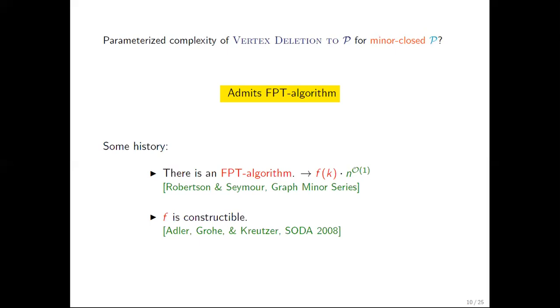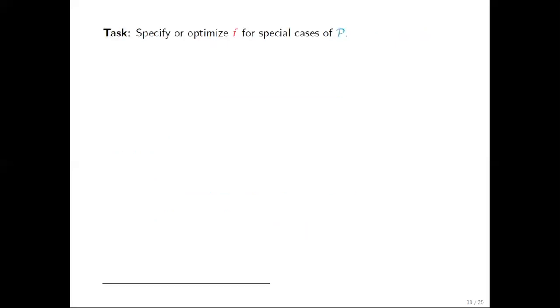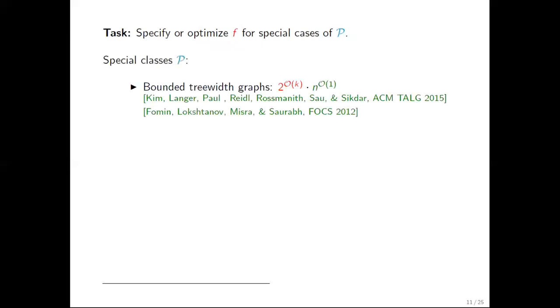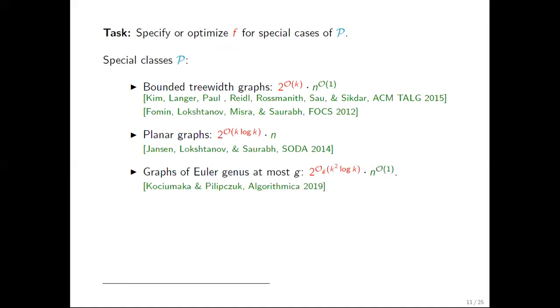After proving the fixed-parameter-tractability of the problem, efforts focused on specifying or optimizing the function f for special cases. For example, for the class of bounded treewidth graphs, a single exponential bound on k was proved by two different groups of authors. Also, there is a series of results concerning the case that P is the class of planar graphs, where the champion of our algorithms is the one of Jansen, Lokshtanov, and Saurabh, of time 2^(k log k) times n. Moreover, in the case of graphs of Euler genus at most g, Marin Pilipczuk and Michal Pilipczuk provided an algorithm with running time single exponential in k^2 log k.